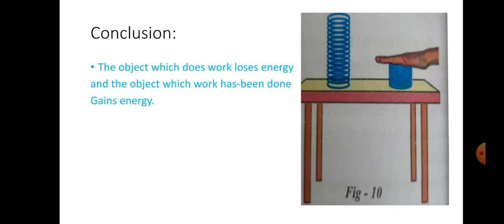From this, we can say that the object which does work loses energy and the object which work has been done gains energy. If you observe the picture here, the spring is compressed by your palm. That means the work is done by your palm on the spring. The object which does work loses energy. That means your palm loses energy and the spring gains energy here.